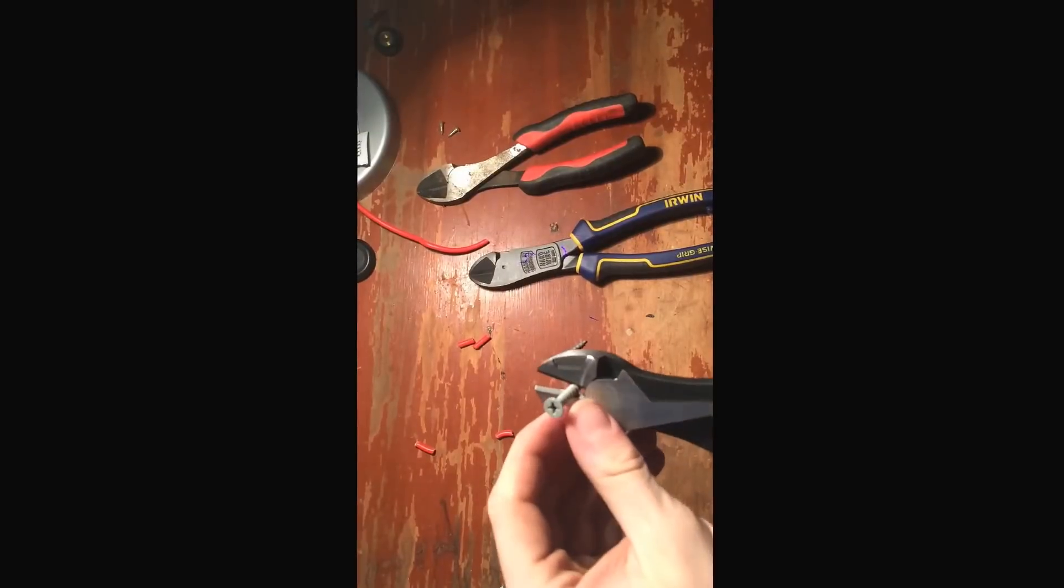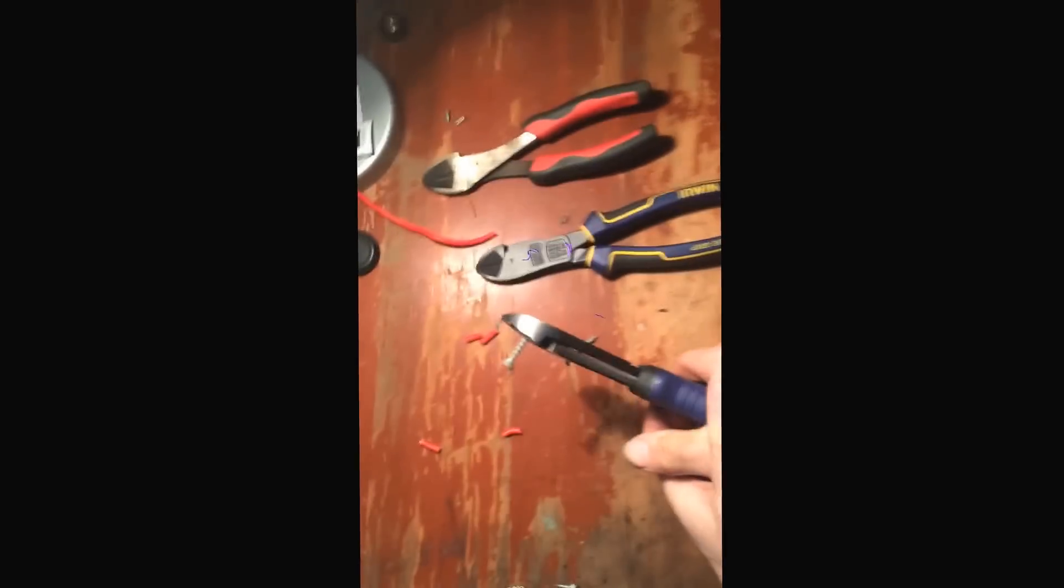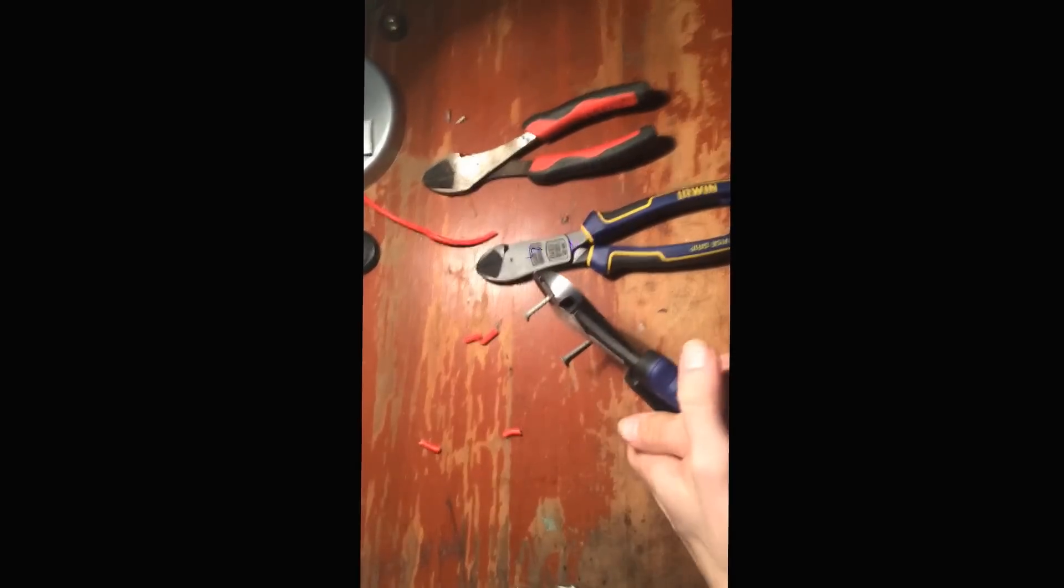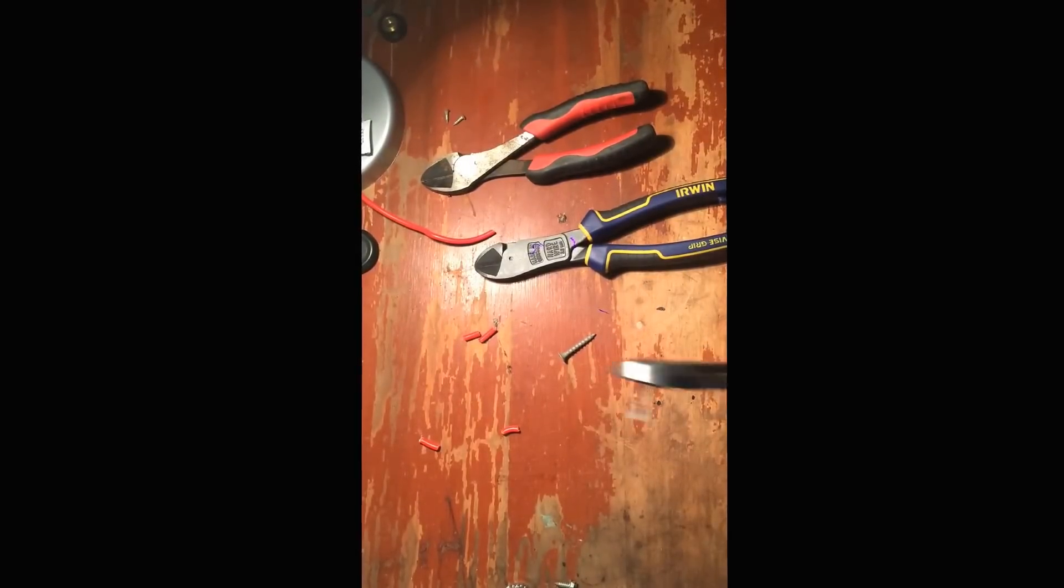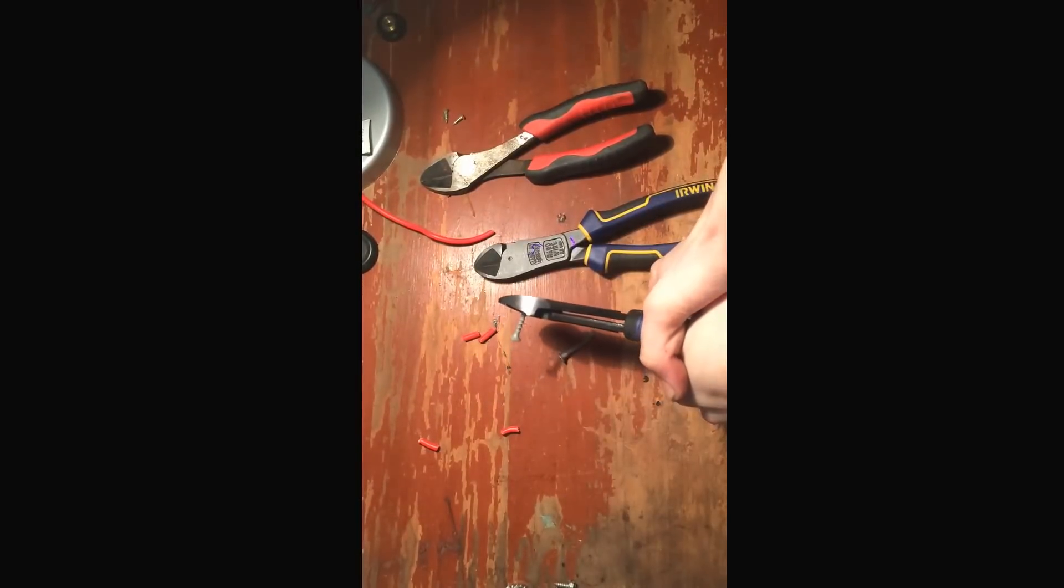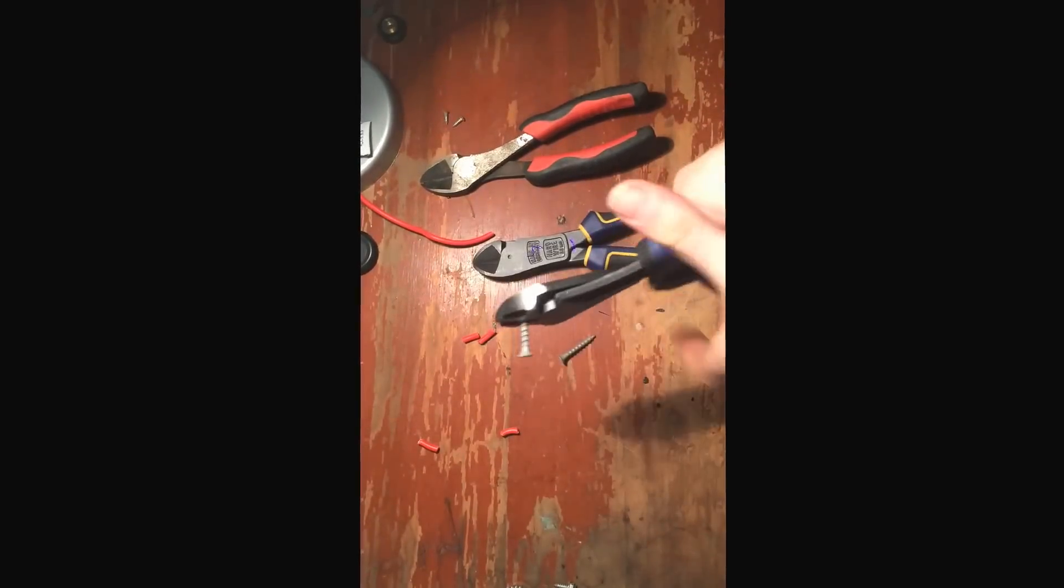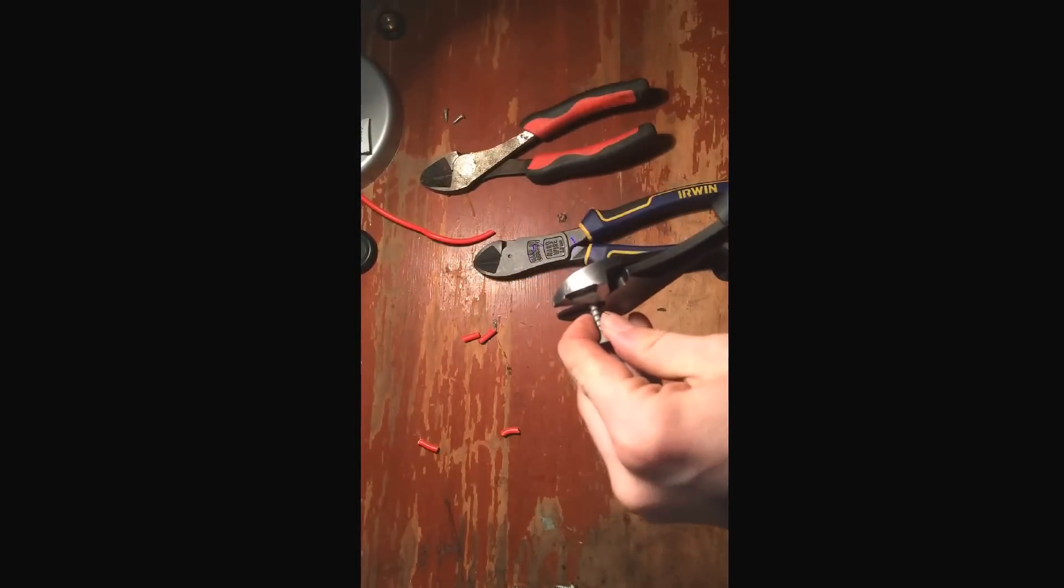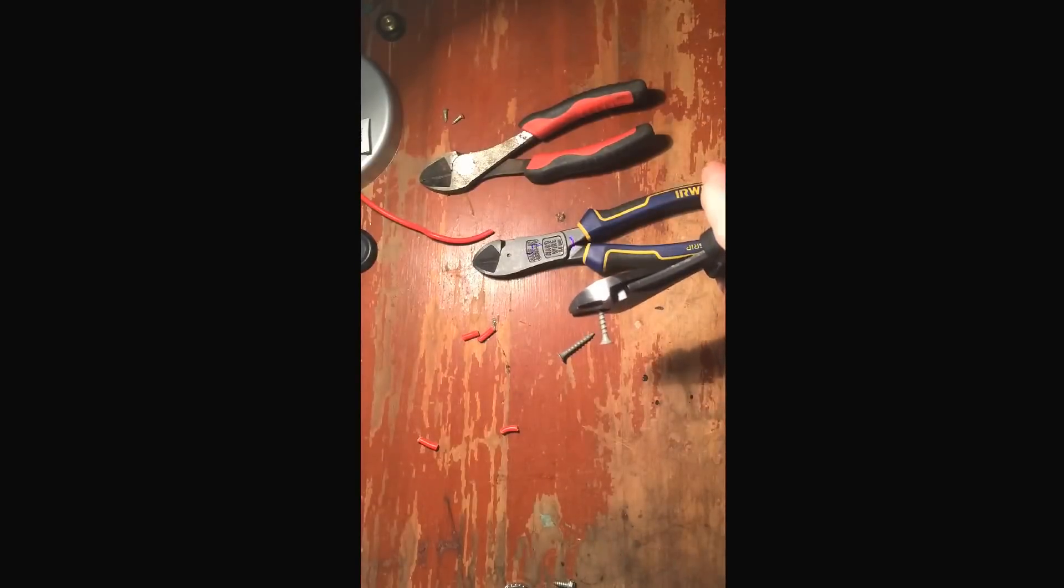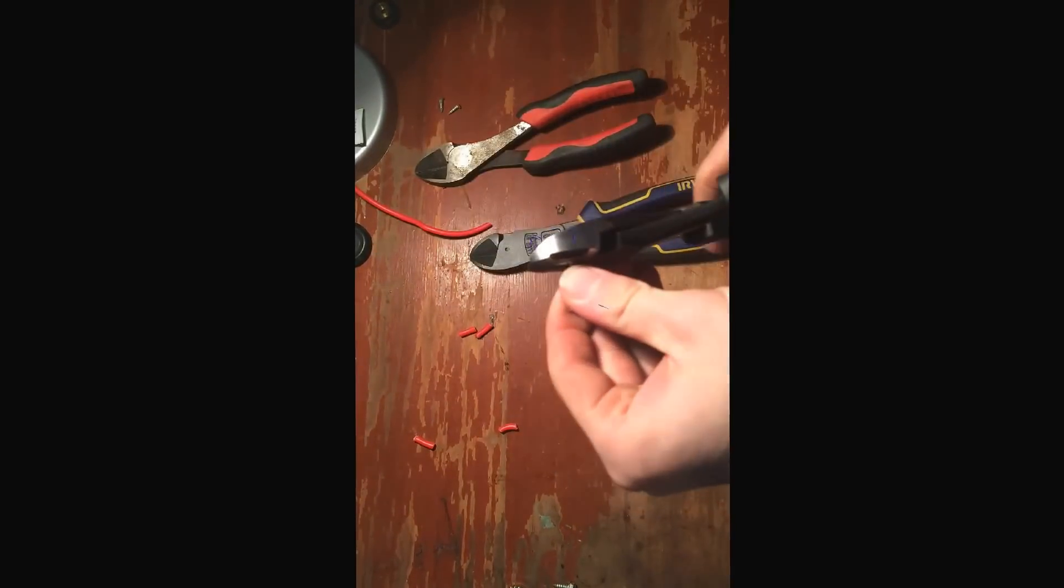So let's try cutting a Phillips head screwdriver with the cobalt side cutters. Oh man. If I put enough force in it I know it's going to cut it. Let's turn that 90 degrees, cut the other end of it. I can definitely feel it digging in.